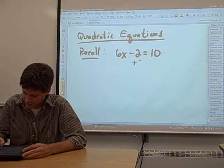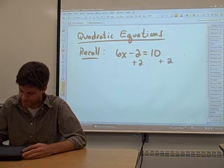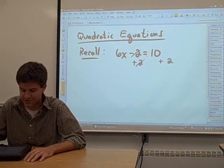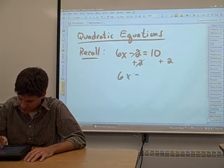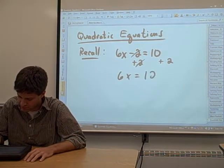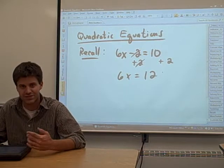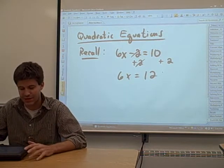To do that, we add a 2 to both sides of the equation. That's going to cancel this stuff out, and we get a 6x equals 10 plus 2 is 12. Now, we have a 6 multiplied by our x, and we want to get x by itself.